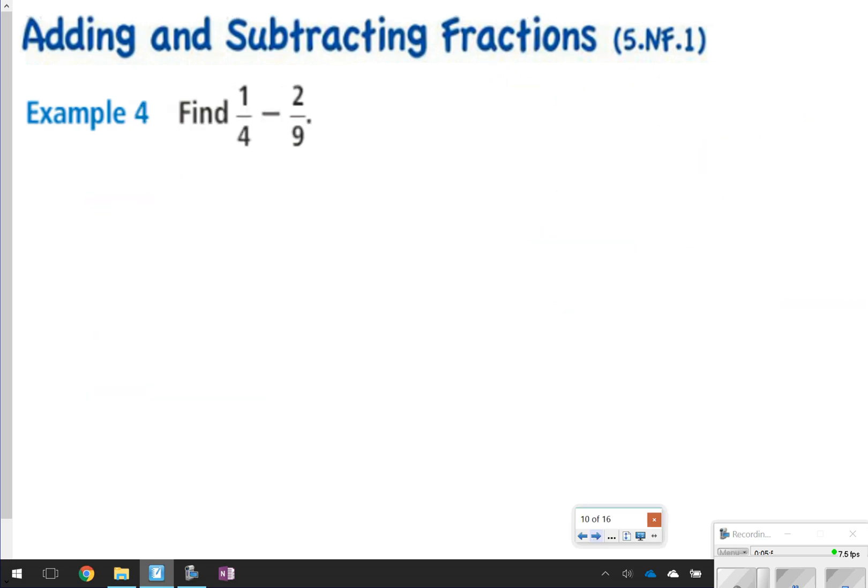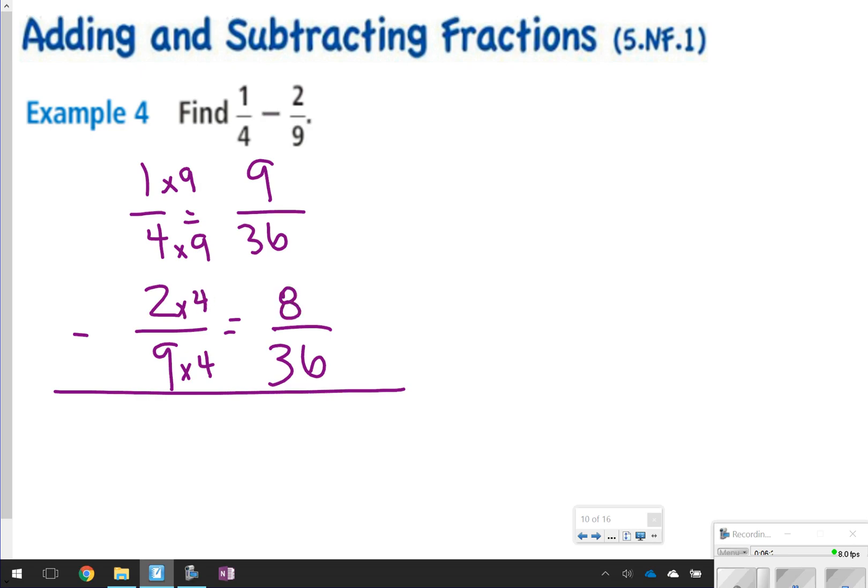Also, another example, subtracting here, you still need to find common denominators. 1 fourth take away 2 ninths. 4 and 9 both have 36 in common. 4 can go into 36, multiplying by 9. So 1 is going to change to a 9, because I multiplied that by 9. 9 can go into 36, 4 times, so the 2 will change to an 8. Now we can subtract. 9 thirty-sixths minus 8 thirty-sixths is 1 thirty-sixth. Only subtracting or adding the top, and keeping the bottom the same.